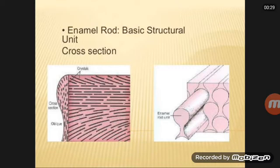The number of enamel rods has been estimated as ranging from 5 million in the lower lateral incisors to 12 million in the upper first molars.